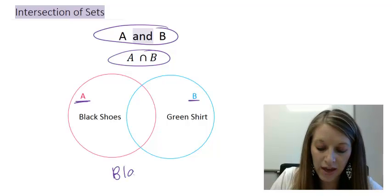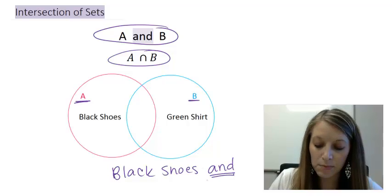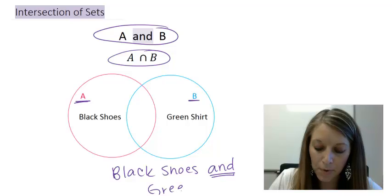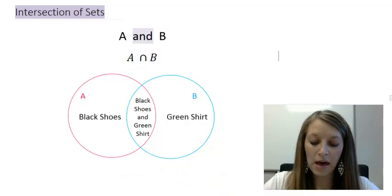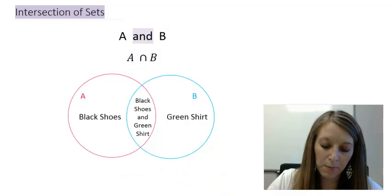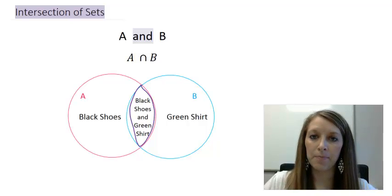So, it just fits with the wording that we use in our English language. And means it has to be both sets of criteria at the same time. So, if we want A and B, that would be this group here. The people that are wearing both black shoes and green shirt at the same time. So, that's what our and statement means.